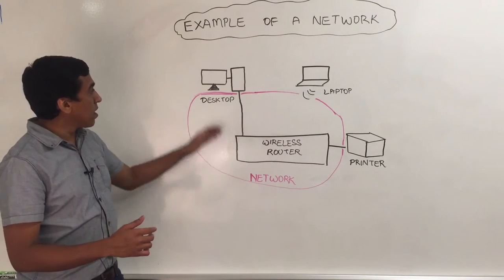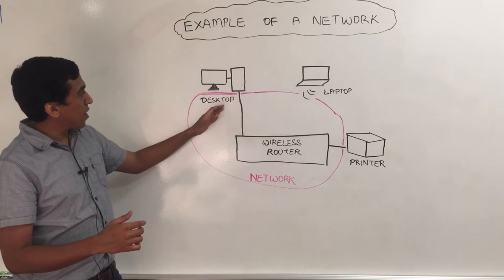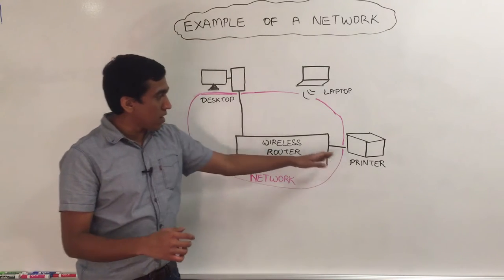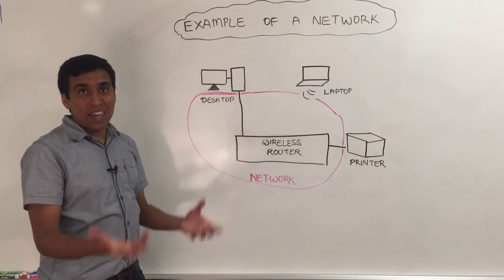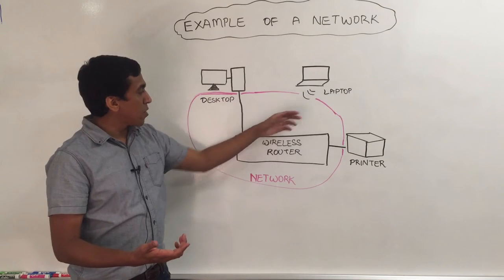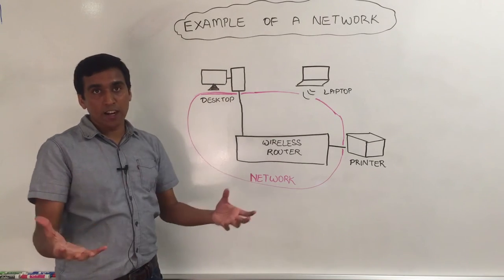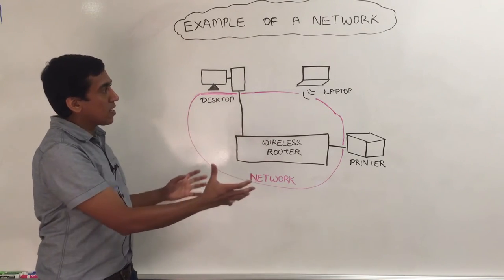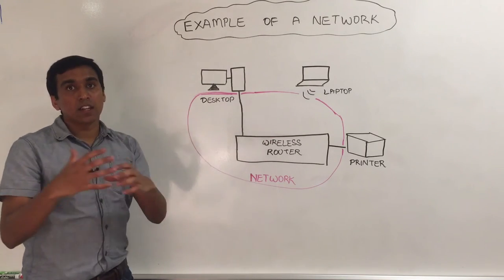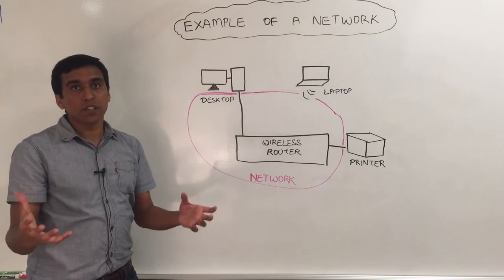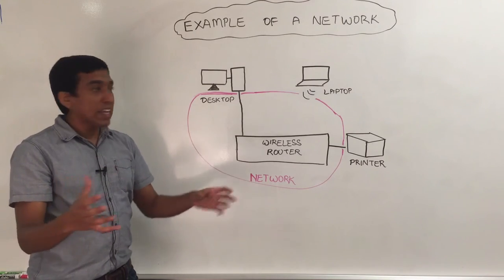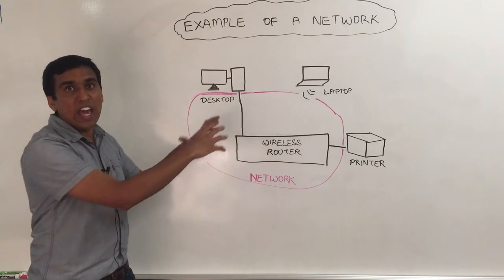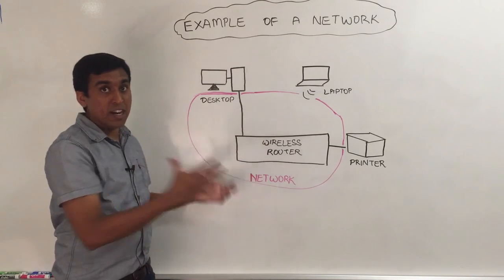In this example we have connected the desktop and printer using cables and we have connected the laptop using the wireless connection. So these three devices can talk among each other easily using the wireless router. So we have just created a network.